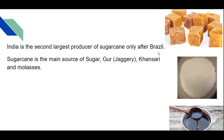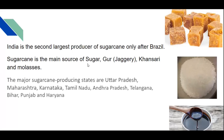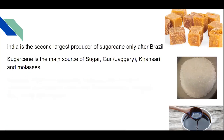India is the second largest producer of sugarcane in the world. The first position goes to Brazil, and after that India is second. When we look at India, the major states cultivating sugarcane are Uttar Pradesh, Maharashtra, Karnataka, Tamil Nadu, Andhra Pradesh, Telangana, Bihar, Punjab, and Haryana.